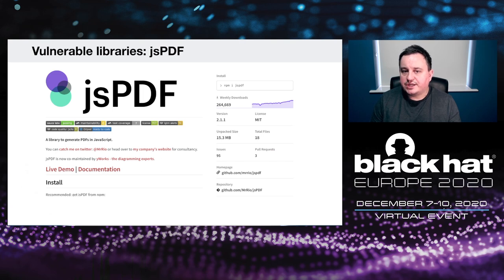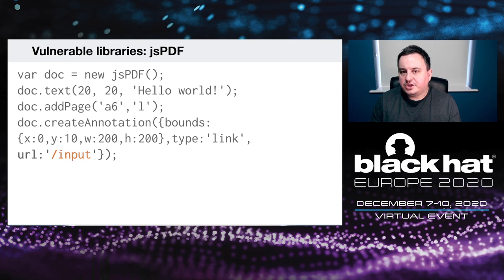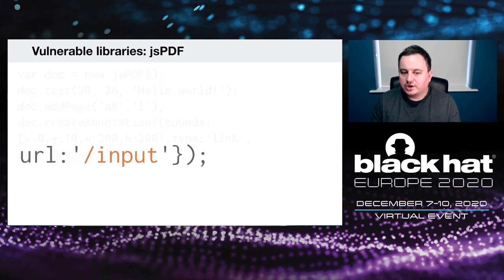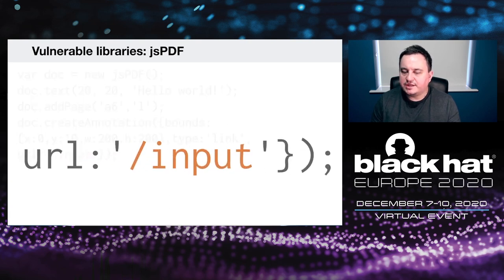The next library was jsPDF, which has over a quarter of a million weekly downloads. You can define annotations using their API, and they have a URL property. That URL property was vulnerable to PDF injection — your input occurs in the URL property, and you can inject parentheses to inject your own PDF code.